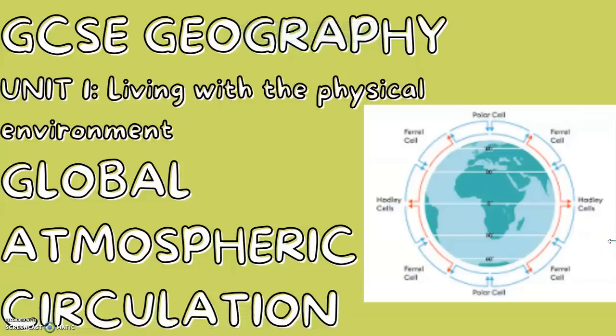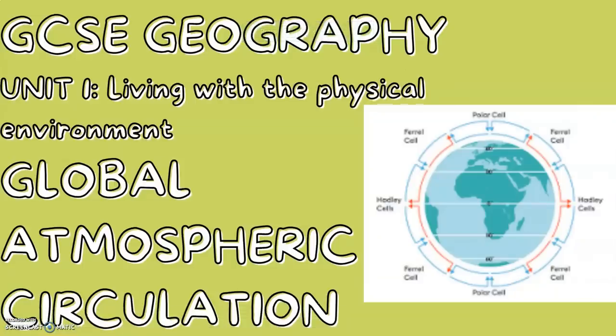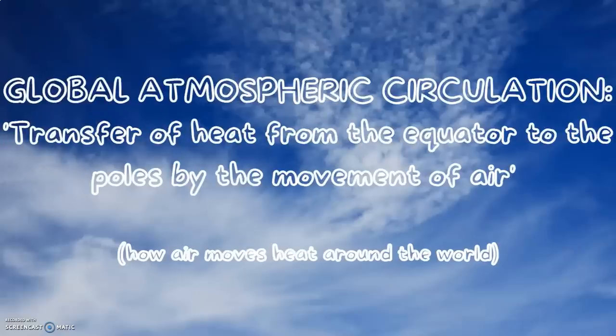Geography: Global Atmospheric Circulation. Global atmospheric circulation is the transfer of heat from the equator to the poles by the movement of air—in other words, how air moves heat around the world.